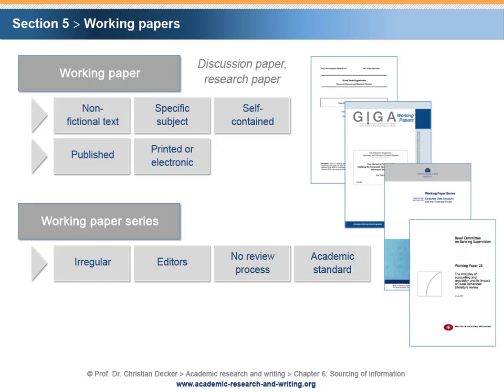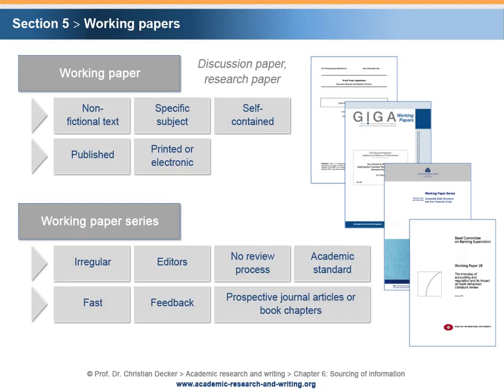In contrast to journal articles, working papers are a fast way of publishing research results. Furthermore, working papers are advantageous for receiving feedback from one's own research community. At a later point in time, a revised version of a working paper's text might be published as an article in an academic journal or as a book chapter.